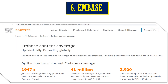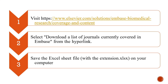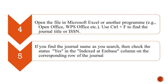Let's see the last database of today's session, that is EMBASE. You go to www.elsevier.com/solutions/embase-biomedical-research. You will get the homepage. Select to download the list of journals currently covered in EMBASE from the hyperlink and save it as an Excel file on your computer. Then you can open the Microsoft Excel document using Ctrl+F to find the journal title or the ISSN number. If you find the journal's name as you search, then click on the status Yes in the Indexed at EMBASE column on the corresponding row of the journal.